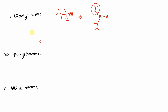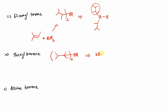Disiamyl borane is prepared when you treat 2-methylbut-2-ene with borane to obtain the disiamyl borane product. Next is the fourth type: thexyl borane. Thexyl borane has a specific structure; it is also represented by a different structure — a tetrasubstituted product obtained when a tetrasubstituted alkene is treated with borane. These are the very basic types of organoboranes.